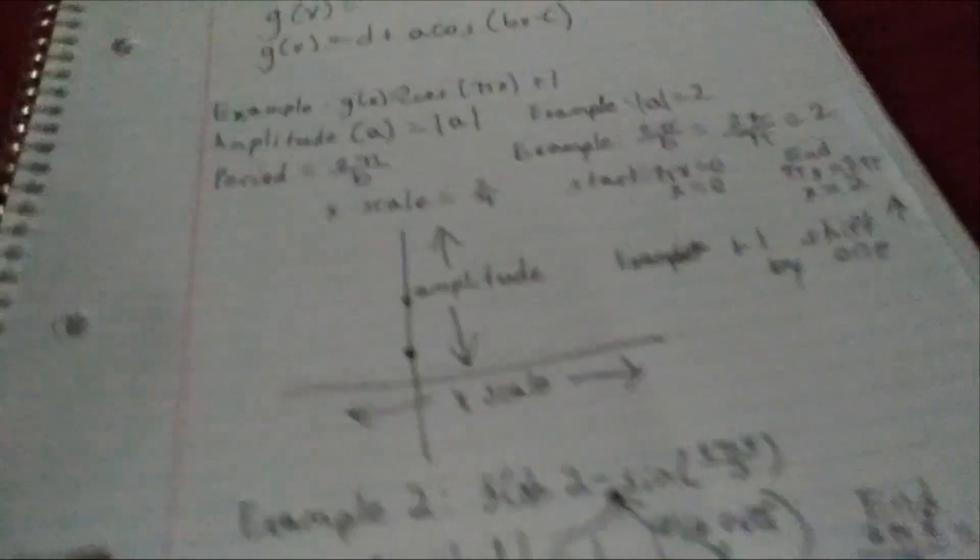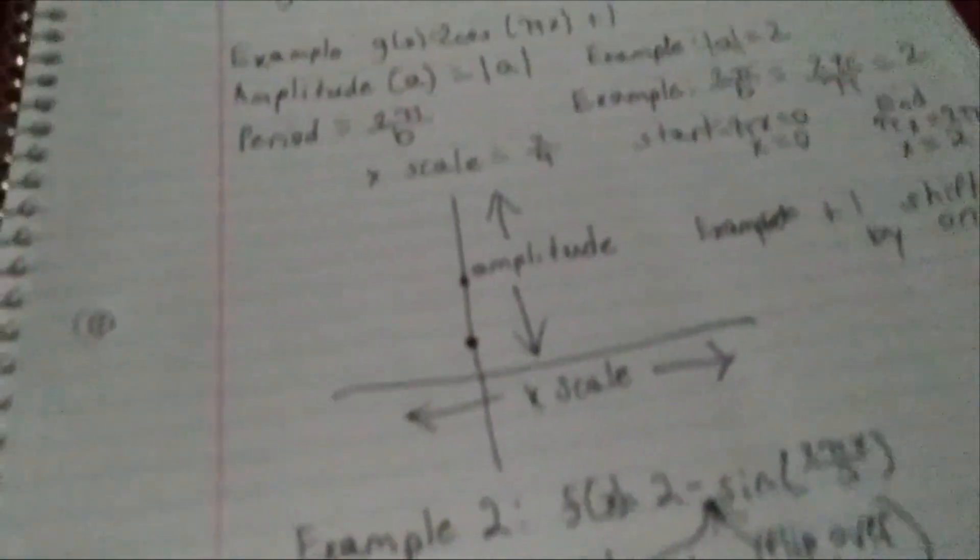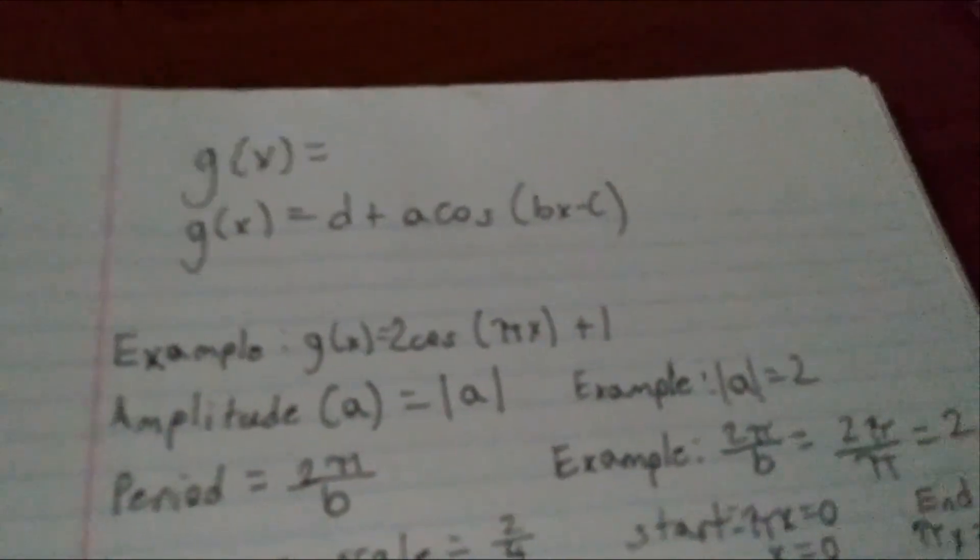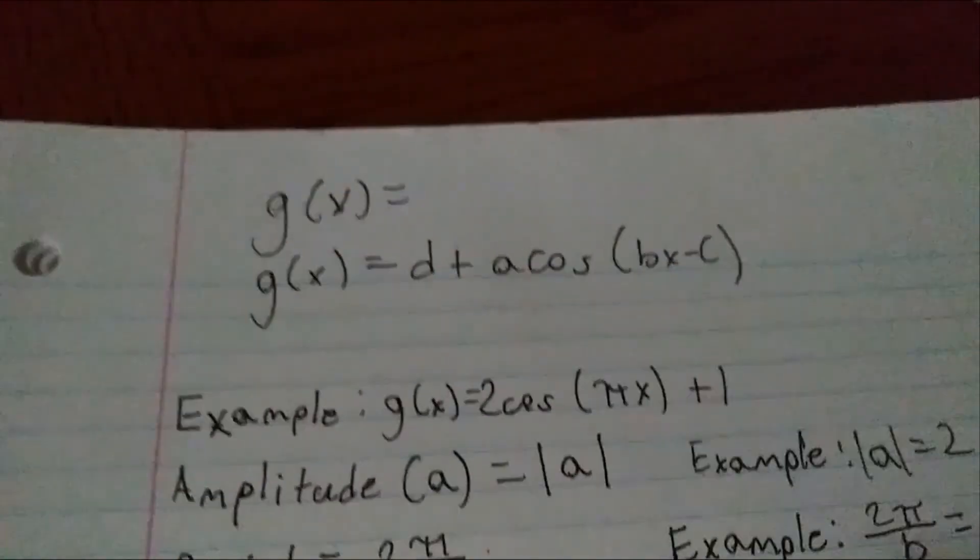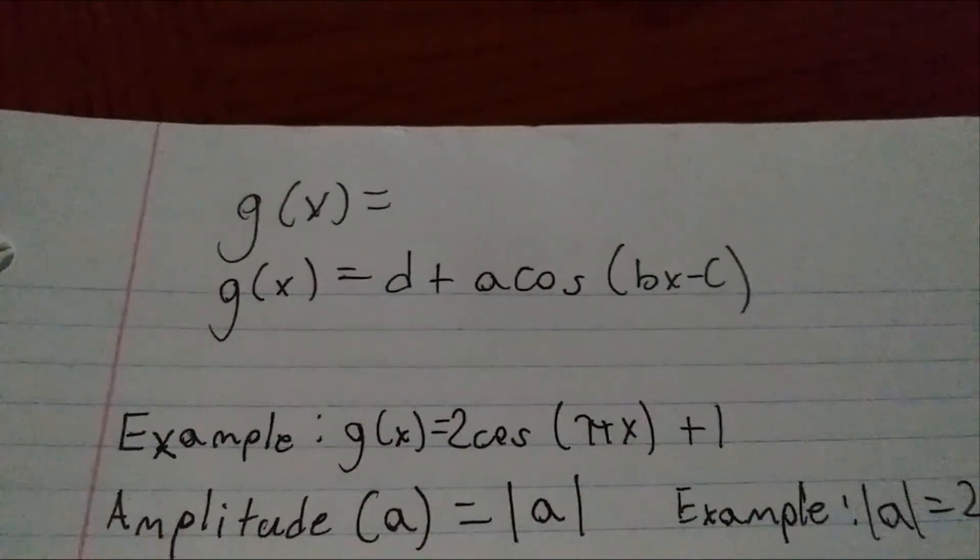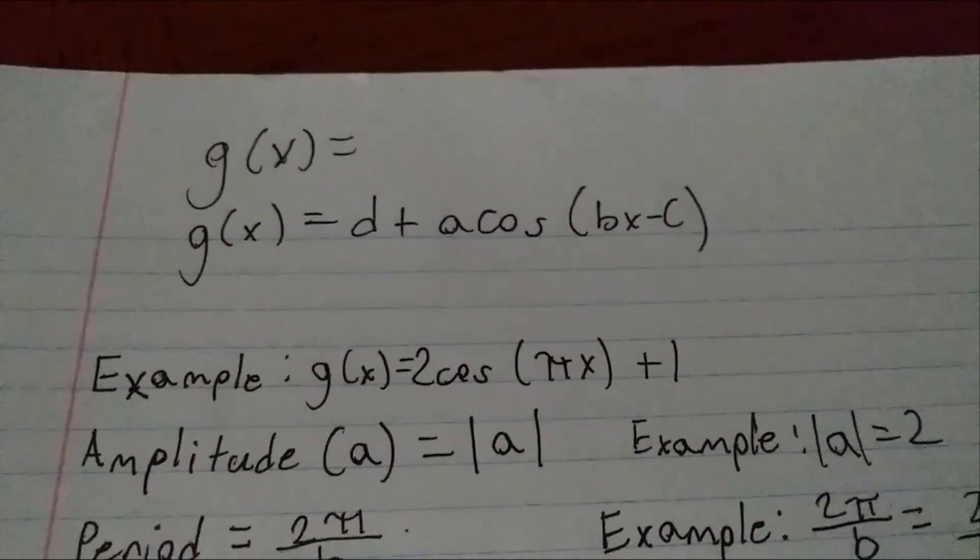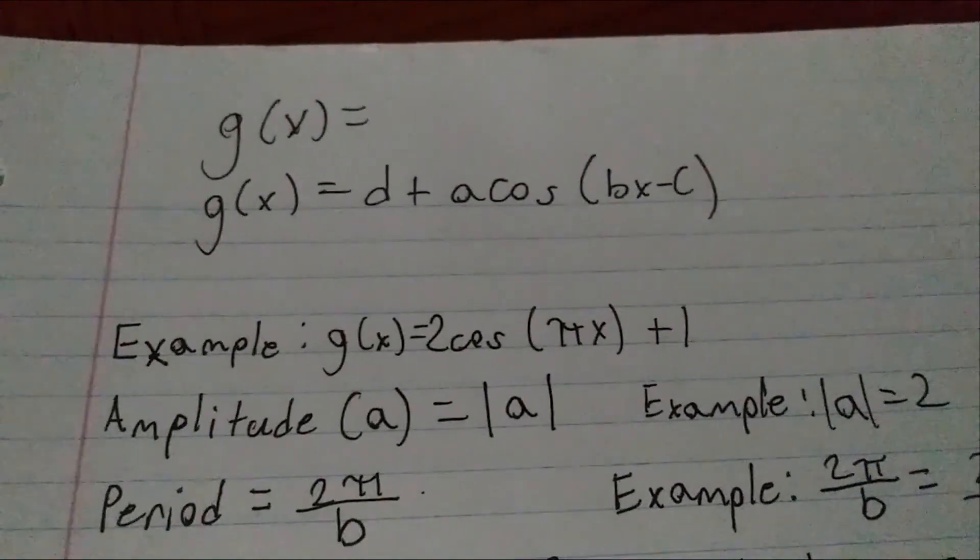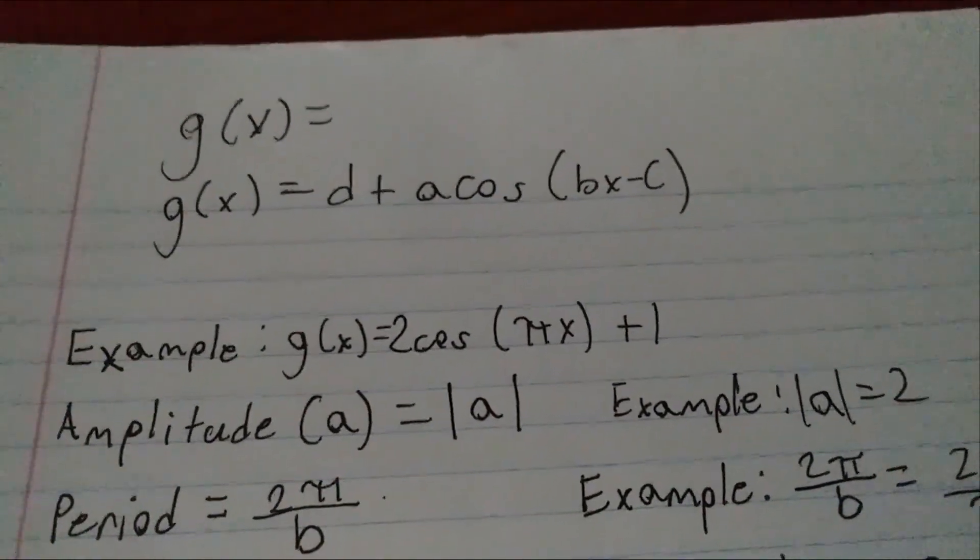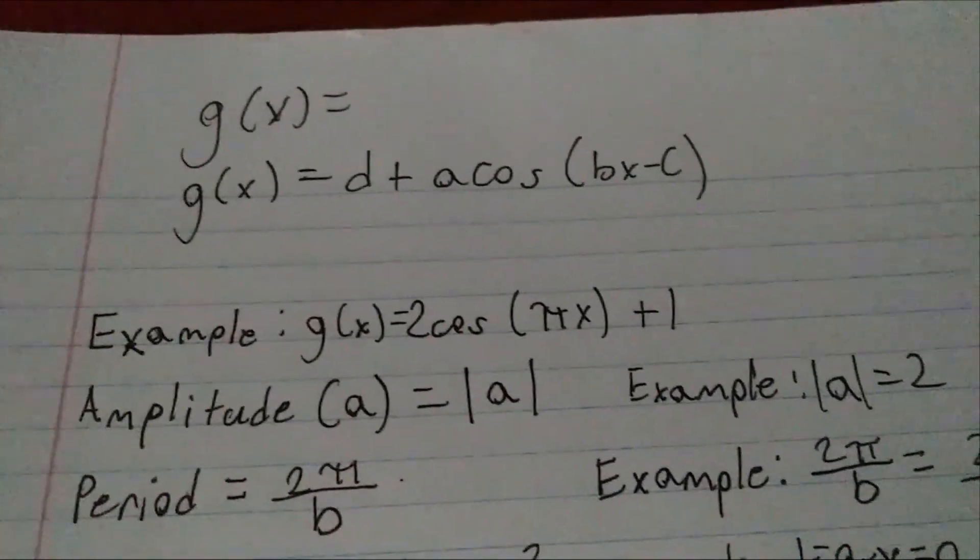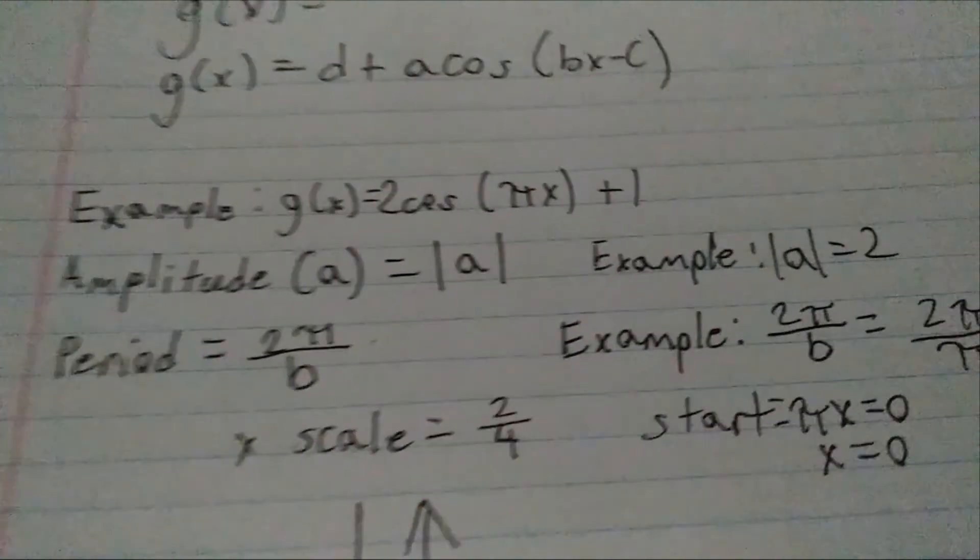I'm supposed to explain how to use vertical shifts of sine and cosine curves. We first need to understand the function that we're looking at, which is, as you can see, f of x or we can use g of x. g(x) equals d plus a cos, which is the cosine of bx minus c. Okay.